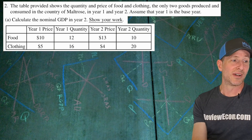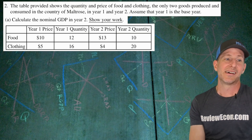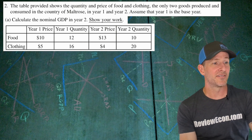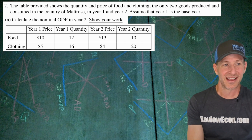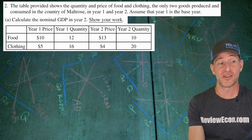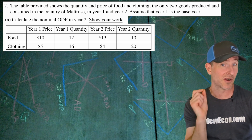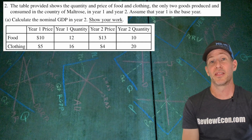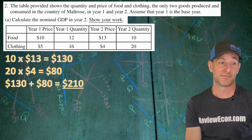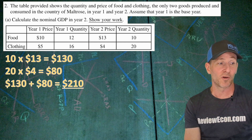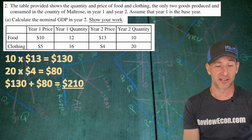On to number two. The table shows the quantity and price of food and clothing — the only two goods produced in the country of Maltros — in year one and year two, with year one as the base year. First, we calculate nominal GDP in year one. For nominal GDP, you take current year quantities times current year prices and sum them up: 10 units of food times $13, plus 20 units of clothing times $4, equals $210. That's our nominal GDP for year two.